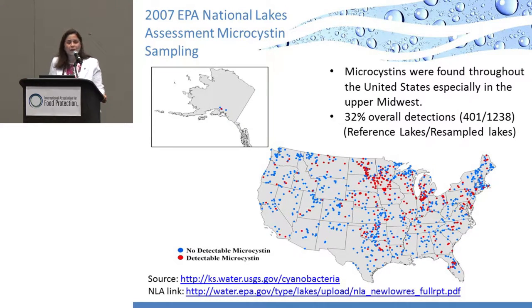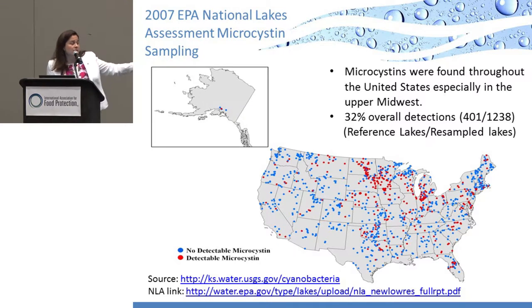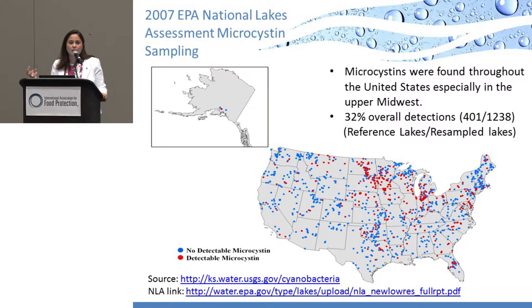This is part of what Kelly mentioned — the 2007 EPA National Lakes Assessment. EPA, in collaboration with USGS, does national assessments of water quality nationwide every five years. In 2007, we sampled for microcystin and 32% of overall detections were positive. The National Lakes Assessment is not a bloom chaser — it takes random samples in lakes to determine overall water quality, not sampling where a bloom is. Having 32% positive for microcystin detections was very significant for us.